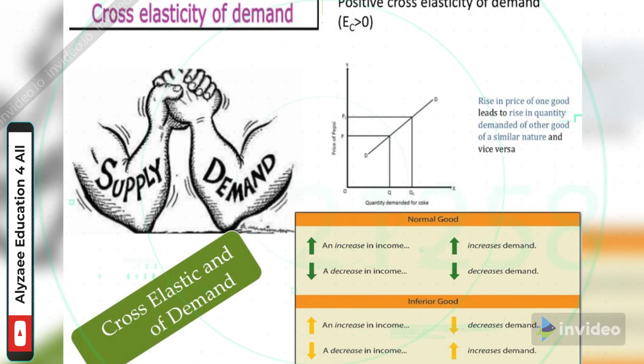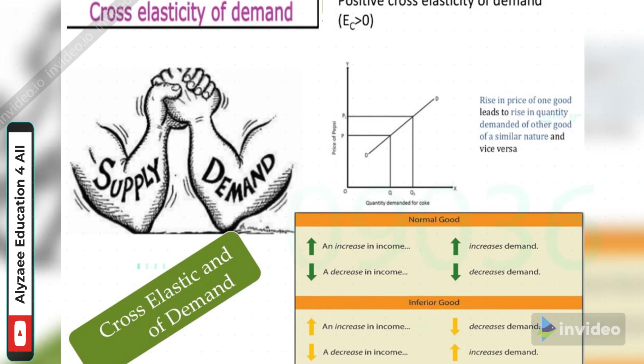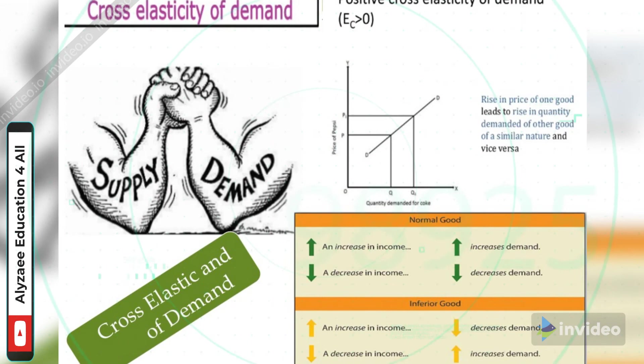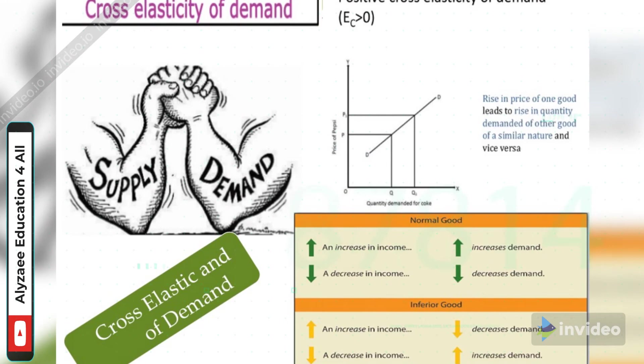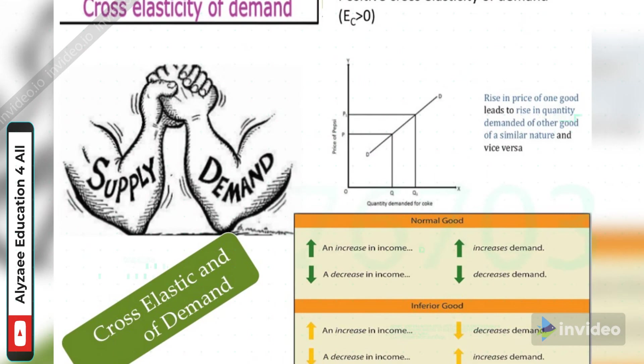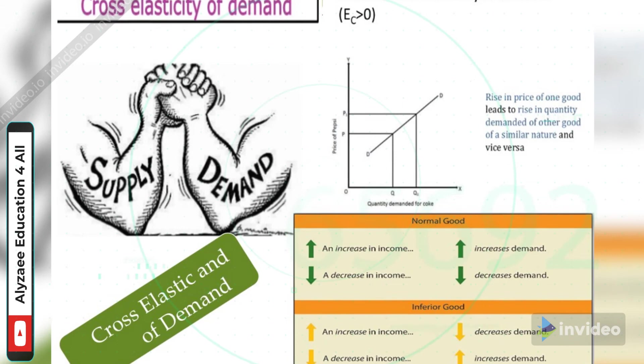So normal goods: an increase in income means increases demand, a decrease in income means a decrease in demand. Whereas an inferior good: an increase in income means decrease demand, as I've given the example previously that with the increase in income you will drop the demand for old fashion TV towards the LED.